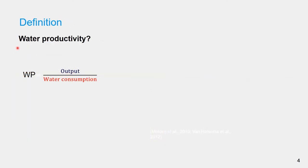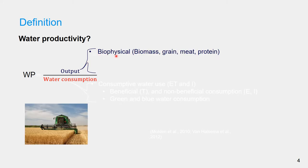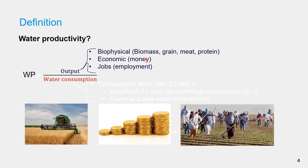Water productivity is defined as output per unit of water consumption. The output can be expressed as biophysical, which is biomass, grain, meat or protein, or it can be expressed in the form of how much money generated, or how much employment created.